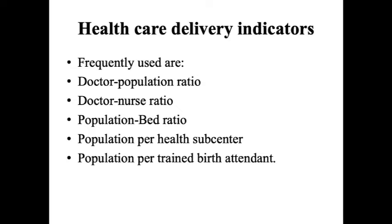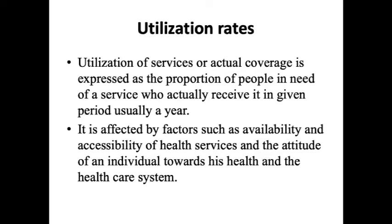Healthcare delivery indicators include the doctor-to-population ratio, doctor-to-nurse ratio, population-to-bed ratio, population per health sub-center, and population per trained health worker. These are frequently used indicators for measuring healthcare delivery.